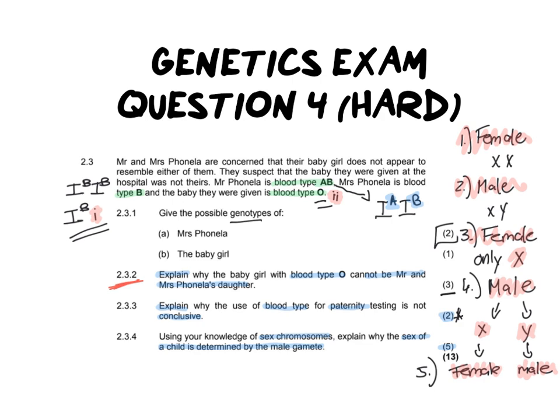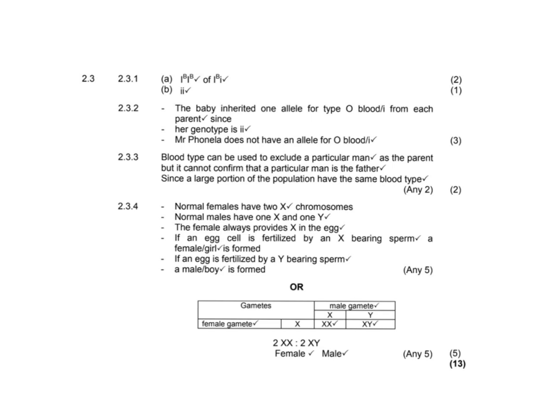Here is the memo for you to go through once again. Focus on the explanations in questions 2.3.2 and 2.3.4, and use the template answer suggested throughout this video. You can apply it to every single inheritance explanation question — whether they ask about red-green color blindness or dwarfism, the same template works every time; you just substitute in the specific example. This is what I use with my students and it works really well. I hope you've enjoyed this video, give it a thumbs up, and I will see you all again soon. Bye.